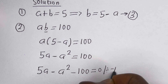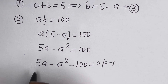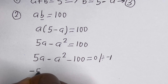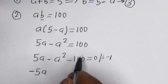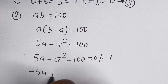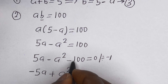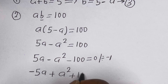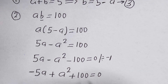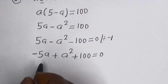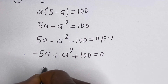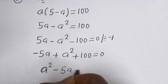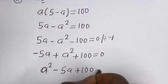Let us divide all through by minus 1. 5A divided by minus 1 gives minus 5A; minus A squared divided by minus 1 gives plus A squared; minus 100 divided by minus 1 gives plus 100, all equal to 0. Putting this in standard form: A squared minus 5A plus 100 is equal to 0.